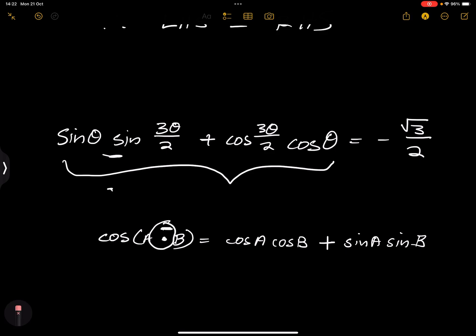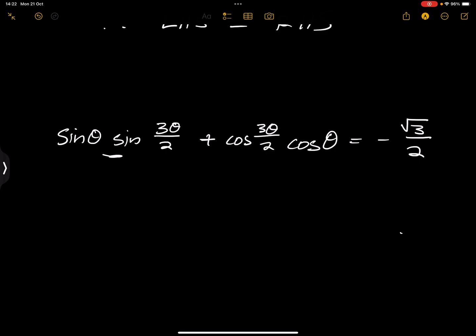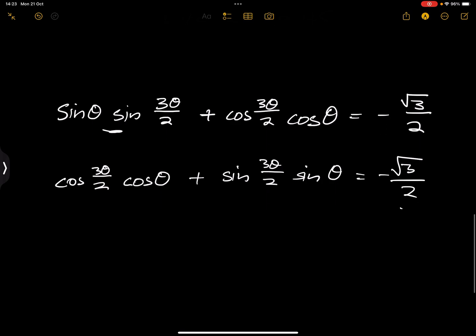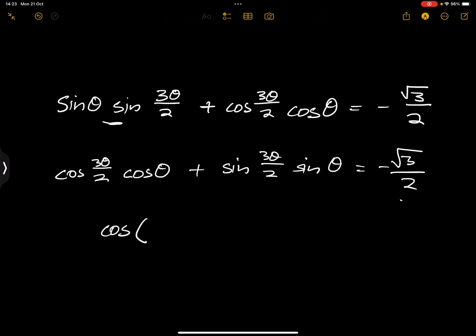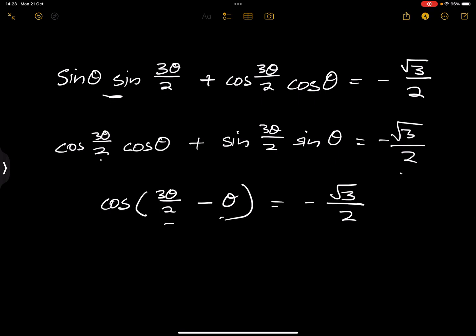This means it's the cos of a minus b, where a = 3θ/2 and b = θ. So we get cos(3θ/2 minus θ) = negative root 3 over 2. Both are in terms of theta: 1.5θ minus θ gives θ/2. So this simplifies to cos(θ/2) = negative root 3 over 2.